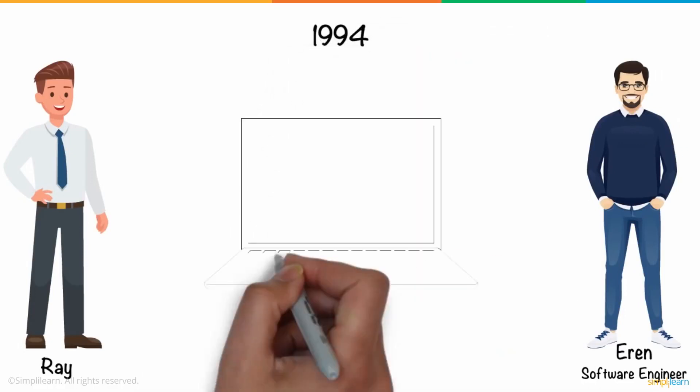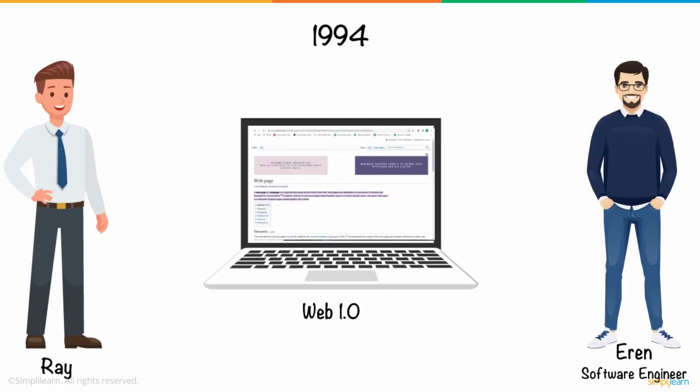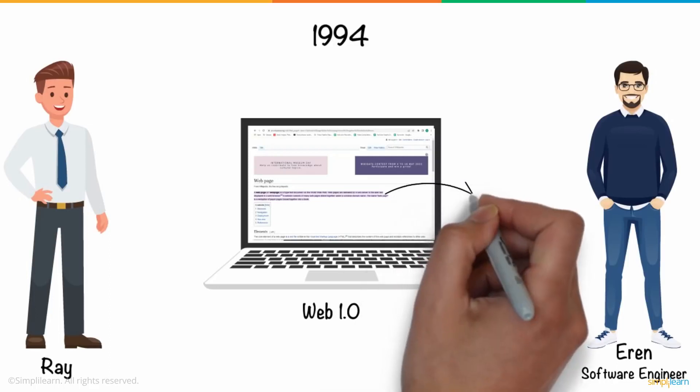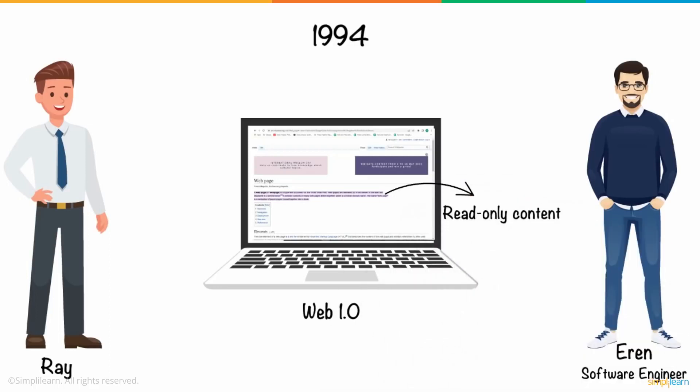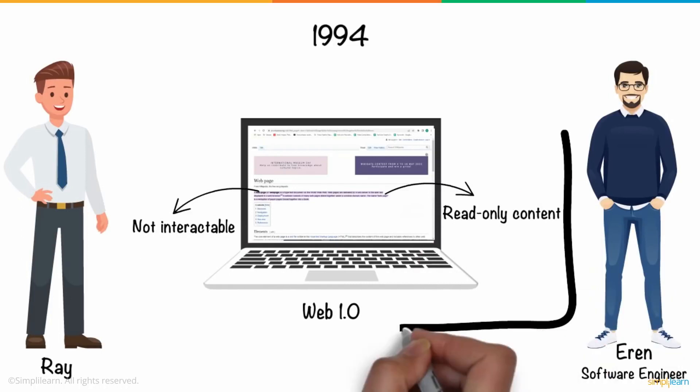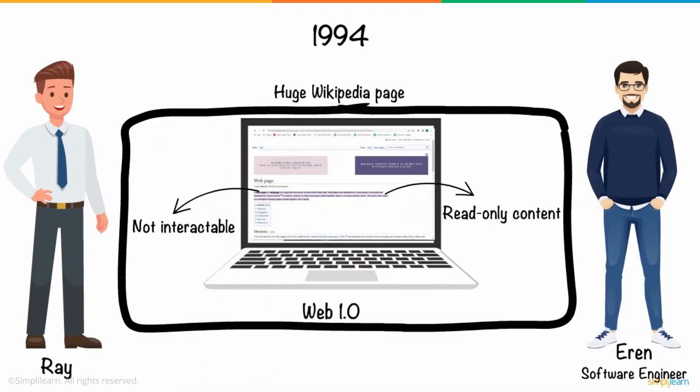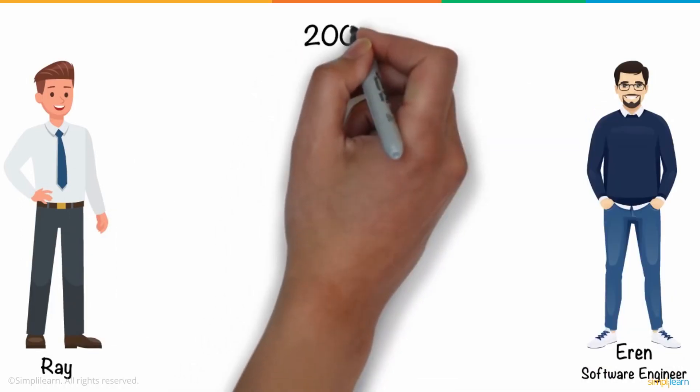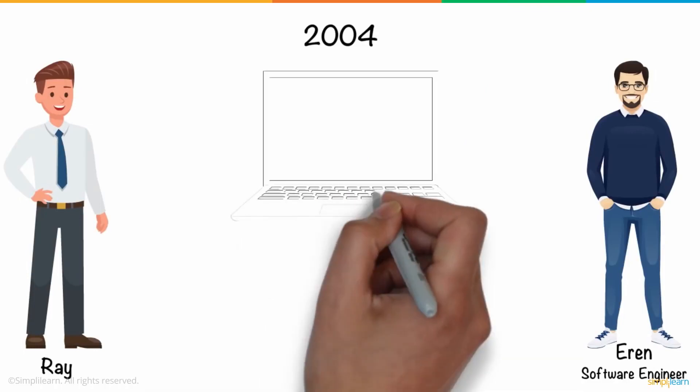It all started in 1994 when Web 1.0 was introduced to the internet. Basically, Web 1.0 was all read-only content that was not interactable and was similar to a huge Wikipedia page. But after a few years in 2004, Web 2.0 came into the picture.